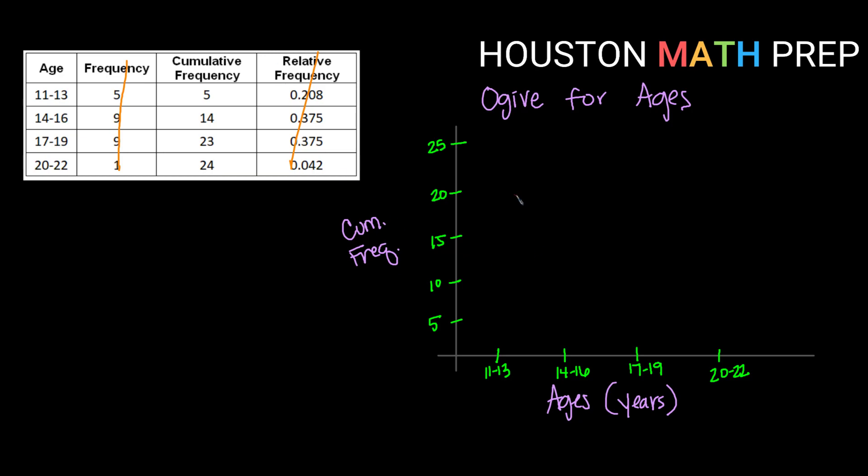So now I'm going to go in and for each class I'm going to graph its cumulative frequency. So for 11 to 13, my cumulative frequency is the same as my regular frequency which is 5. For 14 to 16, I'm going to go up to where 14 would be and place my dot right above my tick mark there.